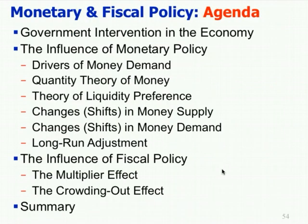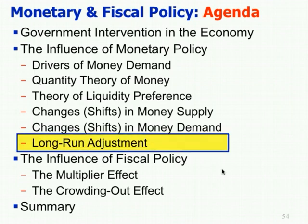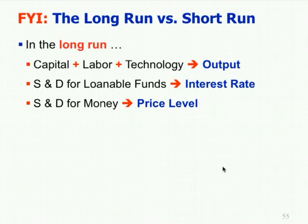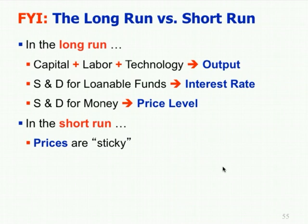That covers shifts in money supply, money demand, and now the last thing is long run adjustment — putting it all together. In the long run: output is driven by capital, labor, technology, and natural resources; the interest rate is driven by supply and demand for loanable funds; and the price level is determined by the supply and demand for money. But in the short run, things are different because first of all, prices are sticky.